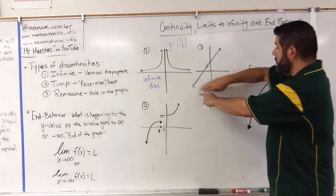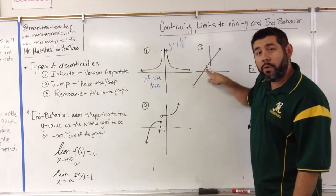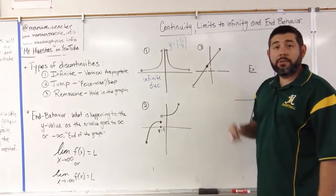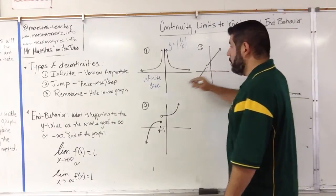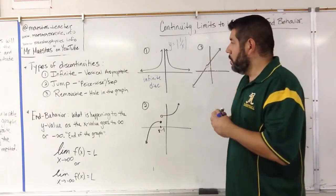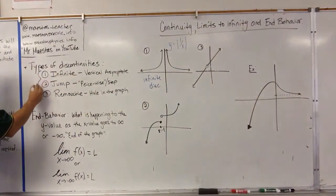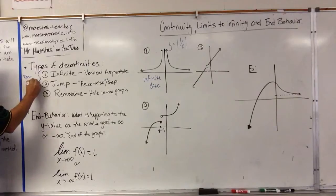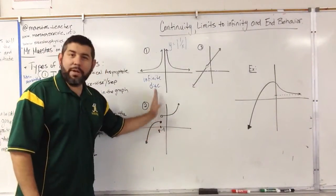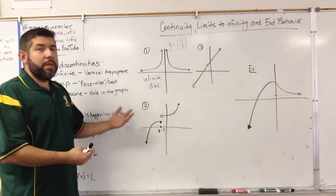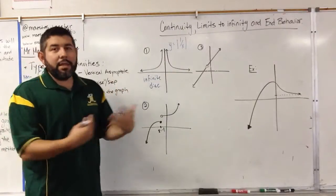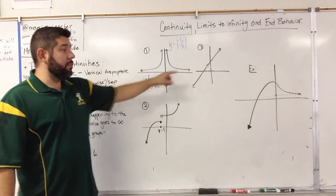Number three: notice this is a line but with one x value missing — one hole in the graph. If we were to draw this and somehow fill in the hole, we would have a continuous function. This is called a removable discontinuity, because we can remove it by filling the hole in, using a piecewise function. The first two are non-removable — you cannot fill in the hole to make it connect. Drawing a vertical line would not be a function, and the asymptote can't be made to disappear. So those are non-removable, and this one is removable.